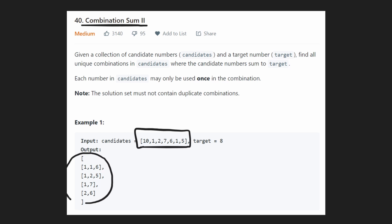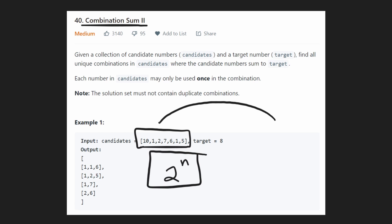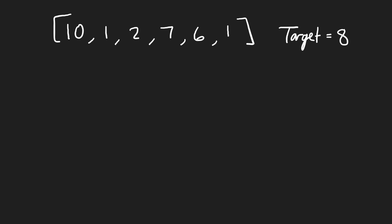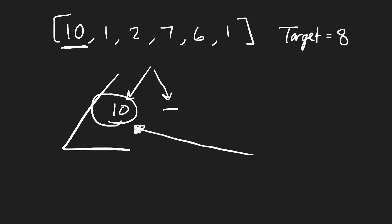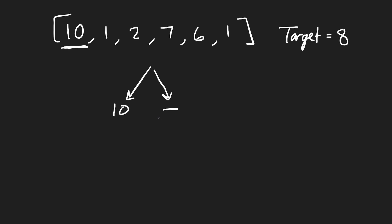No matter how we do it, since we actually have to create all the combinations, the time complexity overall is going to be 2 to the power of n, because for each value we can choose to include it or not include it. N is going to be the size of the input candidates. Now let's take this example input array and try to sum up to target 8. When we choose 10, we already went over the target — since all numbers are positive, we're always going to exceed 8. So this branch stops.